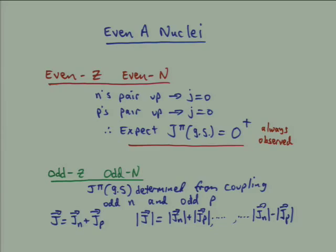Odd-odd nuclei are the most complicated nuclei there are, and there are very few stable ones — only five. There are lots of odd-odd nuclei that are radioactive. The ground state spin and parity of an odd-odd nucleus is determined by the coupling between the odd proton and the odd neutron, so I have to think about the angular momentum of both the neutron and the proton.